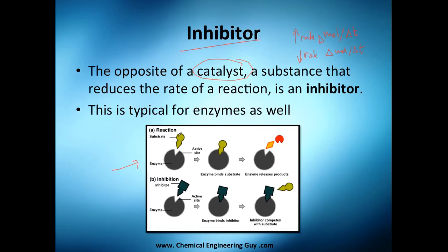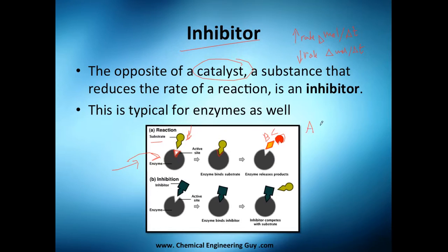Here's the reaction: this is your reactant, let's say the substrate, and the enzyme is nothing more than a catalyst. You have an active site in which the catalyst interacts with the reactant. They get together and form two products — let's say B and C. Essentially, you're transforming A into B and C with the help of this enzyme.